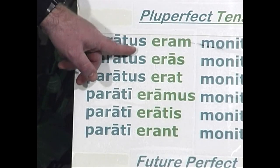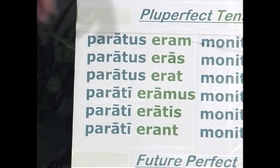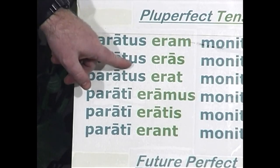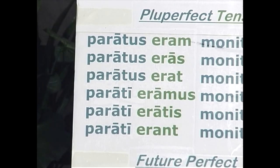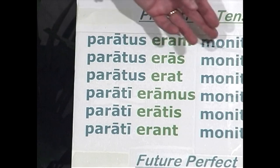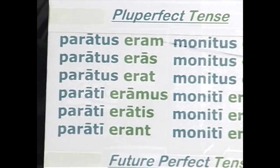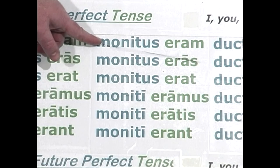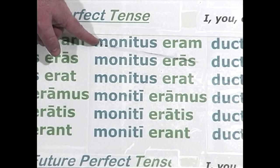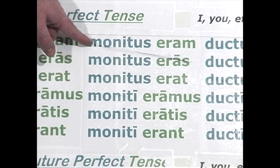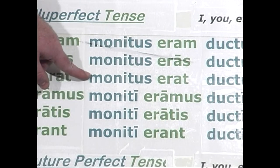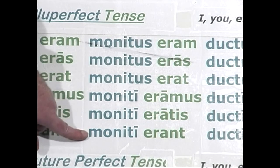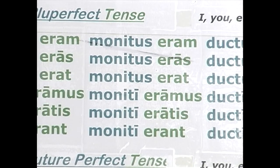Remember, for the singular persons it's a singular form, and once we learn the noun system you'll understand that -us is singular and -i is plural. The pluperfect passive indicative of a second conjugation verb follows the same pattern: fourth principal part plus the imperfect of sum. Monitus eram — I had been warned. Monitus erat — he or she or it had been warned. Moniti erant — they had been warned. Pluperfect passive indicative.